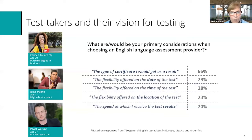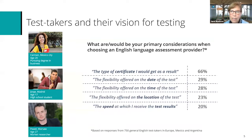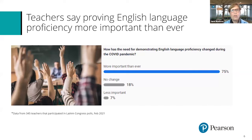After they've found the right test that gives them a certificate that gets them into college or gets them the jobs they want, they are looking for flexibility — flexibility for date, for time, for the location that they take their tests, and the speed at which they receive their results. We've also reached out to teachers and asked them questions about English language proficiency testing: do you have more or less choice nowadays, and how important is it to prove your English language proficiency in these times?